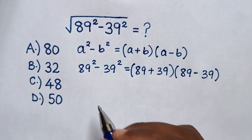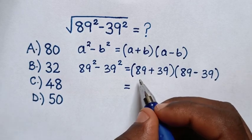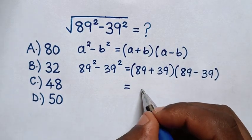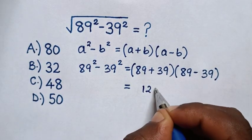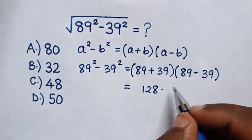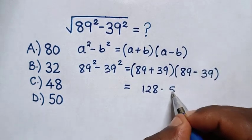Then, it will be equal to 89 plus 39 is 128 times 89 minus 39 is 50.